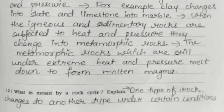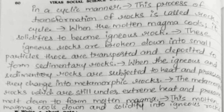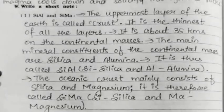Second: What is meant by a rock cycle? One type of rock changes to another type under certain conditions in a cyclic manner; this is called the rock cycle. When molten magma cools, it solidifies to become igneous rock. Igneous rocks break into small particles, which are transported and deposited to form sedimentary rocks. When igneous and sedimentary rocks are subjected to heat and pressure, they change into metamorphic rocks, which under extreme heat and pressure melt again to form molten magma, completing the cycle.